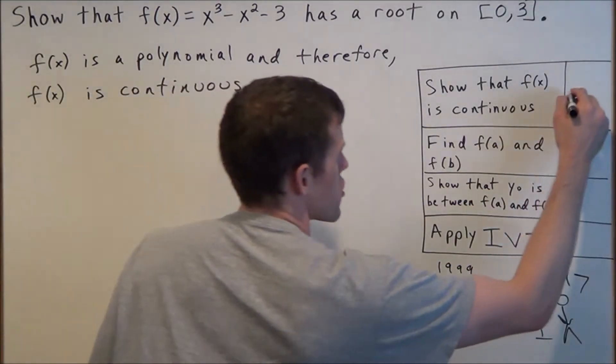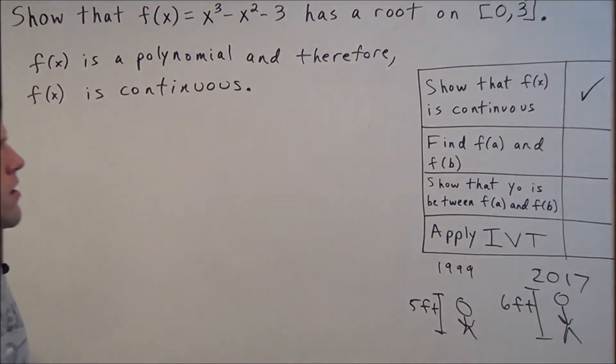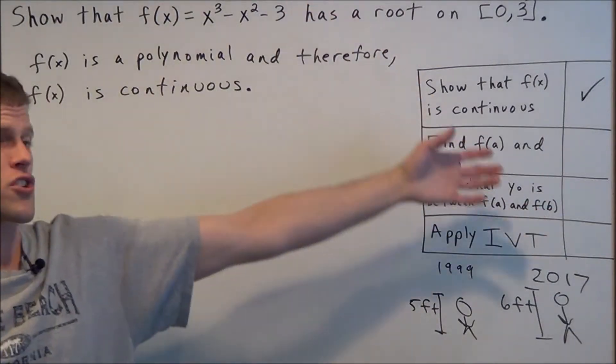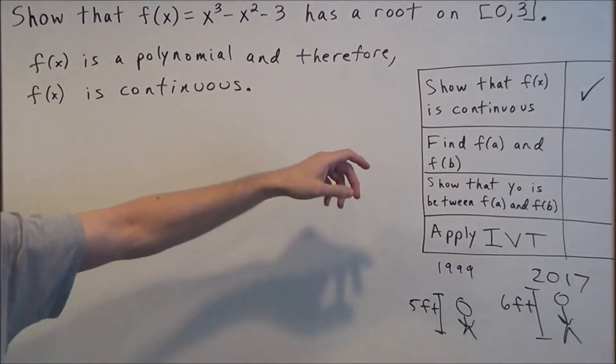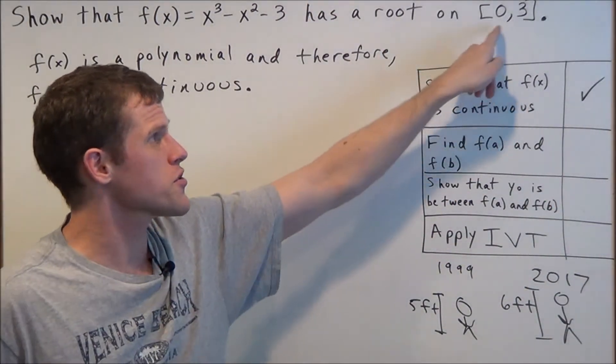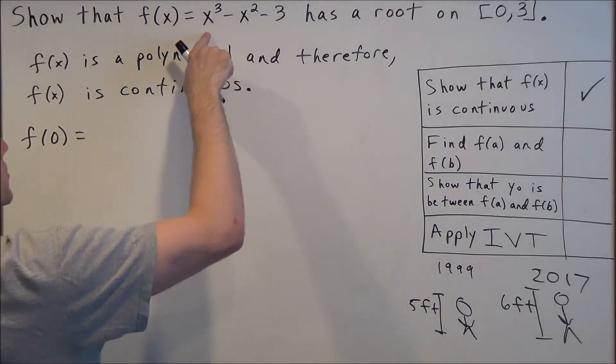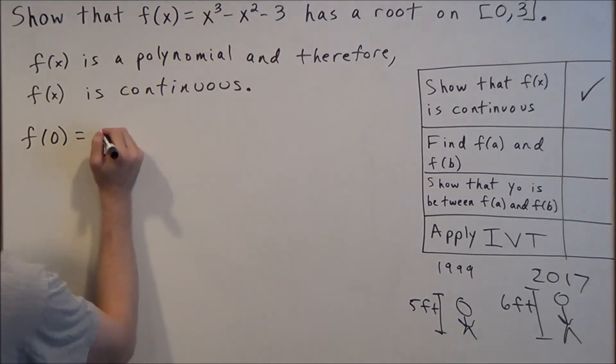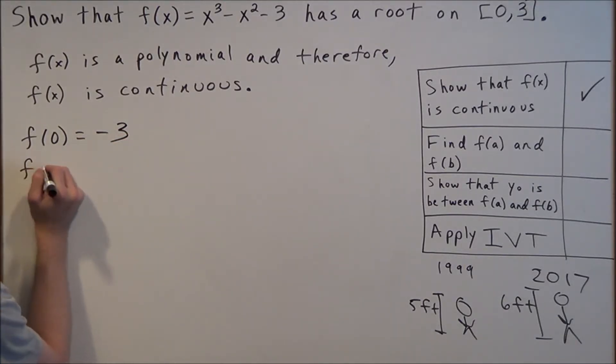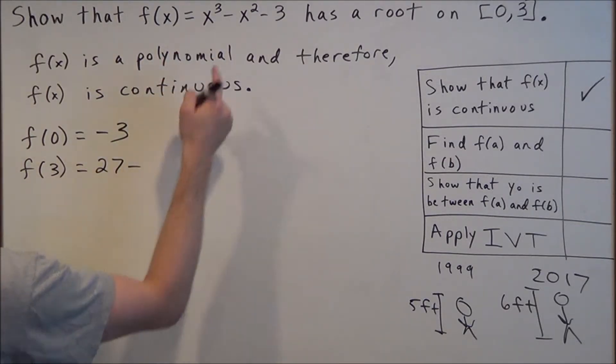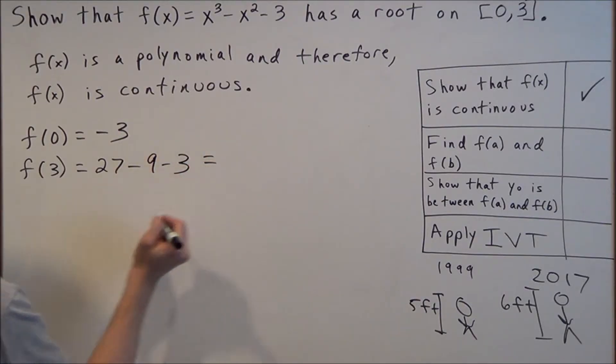The next thing we want to show is the function values at the endpoints. We're going to plug these two endpoints into the function. f(0) = 0³ - 0² - 3 = -3. When we plug in 3, we have 3³ = 27, minus 3² minus 3, so 27 - 9 - 3 = 15.